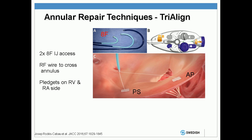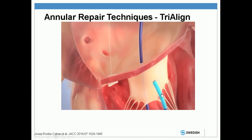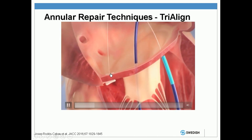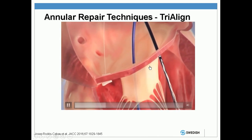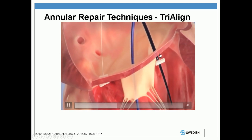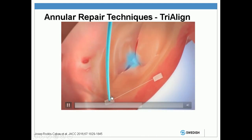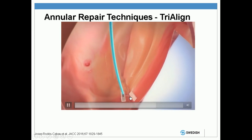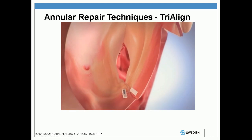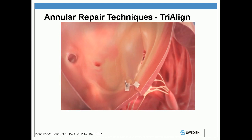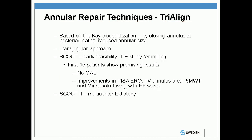This is another device, the Trialine, which is similar to the MitraLine device. This is placed by two 8-French internal jugular accesses, and there are a number of catheters used to deliver radiofrequency wire into the annulus of the tricuspid valve. There's already one pledget — a stitch applied in the septal-posterior commissure. The catheter comes through placing a pledget in the anterior-posterior commissure. The suture is then brought out, and another device is brought in that allows the two commissures to be pulled together and locked into position, resulting in a bicuspidized valve. This Trialine procedure is based on the Kay bicuspidization procedure, closing the annulus at the posterior leaflet and reducing the annular size.